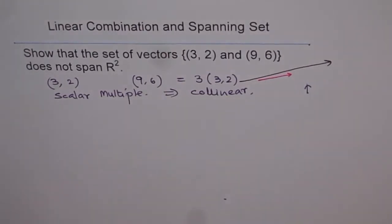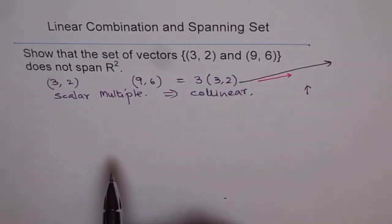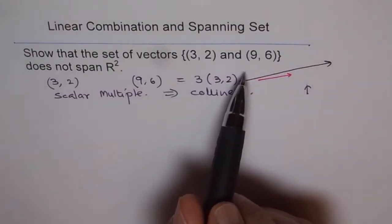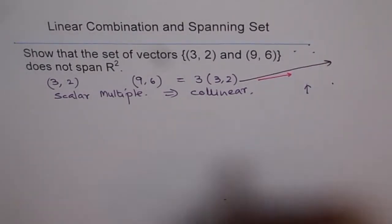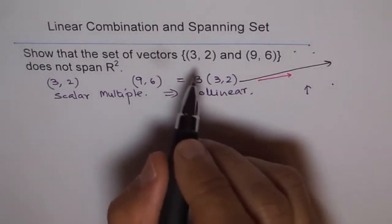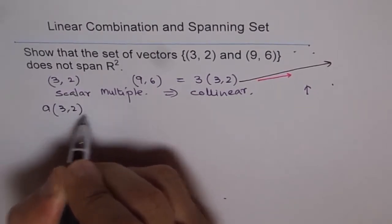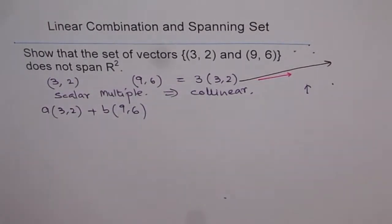That is the graphical reasoning. Now let us also find an algebraic solution. We are trying to find whether this is a spanning set or not. It can be a spanning set if we have a linear combination which can represent any vector in the plane. So let us see what is the linear combination of these two vectors: a times [3, 2] plus b times [9, 6] is the linear combination in general.